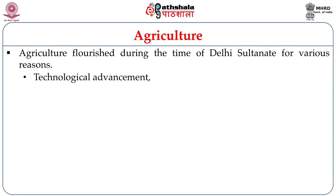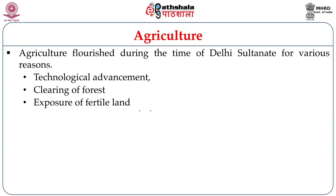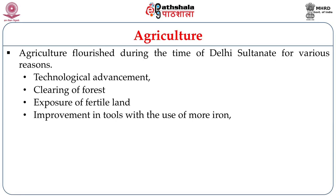The first reason was the technological advancement that came with the advent of the Turks. Technology from the west came to India to promote different changes in the modes of production. Secondly, extensive forest clearing exposed cultivable lands to the peasantry, and this fertile land was then used by the peasants for various agricultural products.